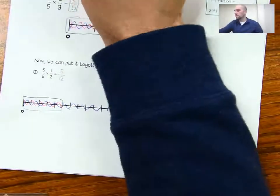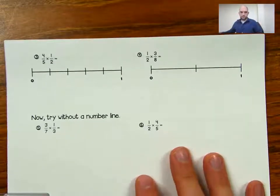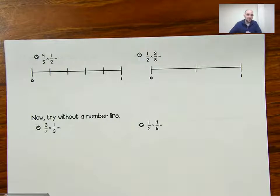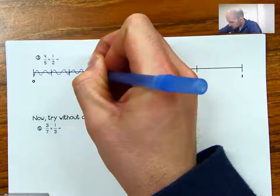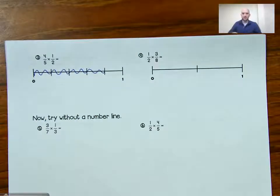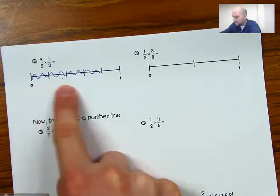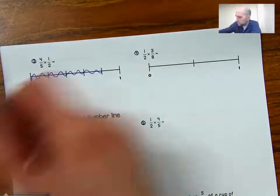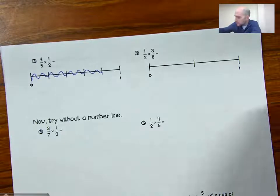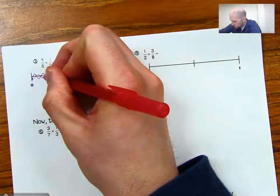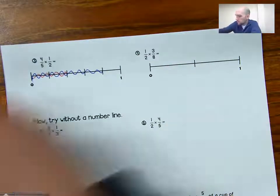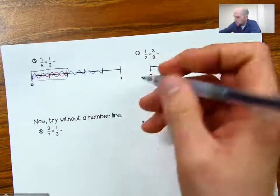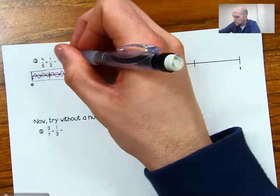So we'll try a couple more. It says four-fifths times one-half, so we need to figure out what one-half of four-fifths is. We start by shading in four-fifths: one, two, three, four — so four-fifths shaded in. I have to figure out what half of that is. I have four of them, so I'll take my red pen and shade in two of them, because two is half of four. I'll end up with just those two, and my answer will be two-fifths.